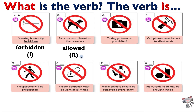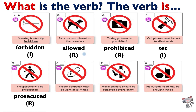So if you see ED - regular. R for regular. 'Taking pictures is prohibited.' This is regular because it has ED at the end of the verb 'prohibit,' which means ban - not allowed. 'Cell phones must be set to silent mode.' The verb is irregular because it changes: set, set, set. There's no ED. 'Trespassers will be prosecuted.' This is also regular because you can see the verb 'prosecute' takes ED at the end.